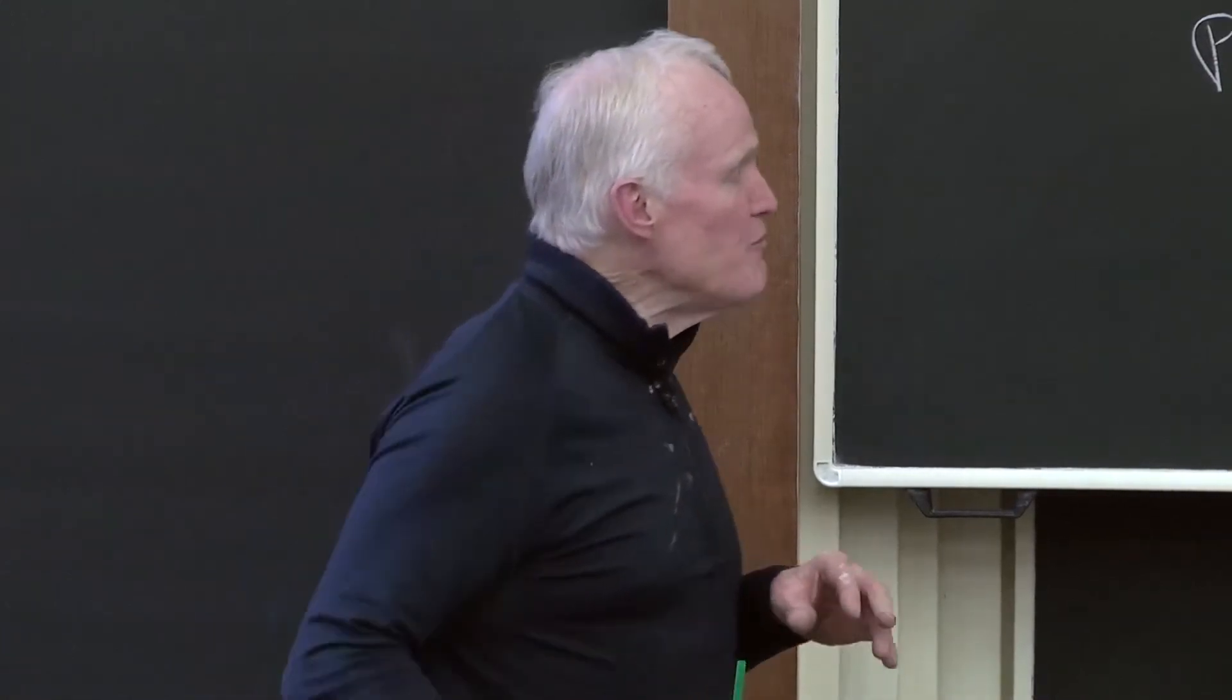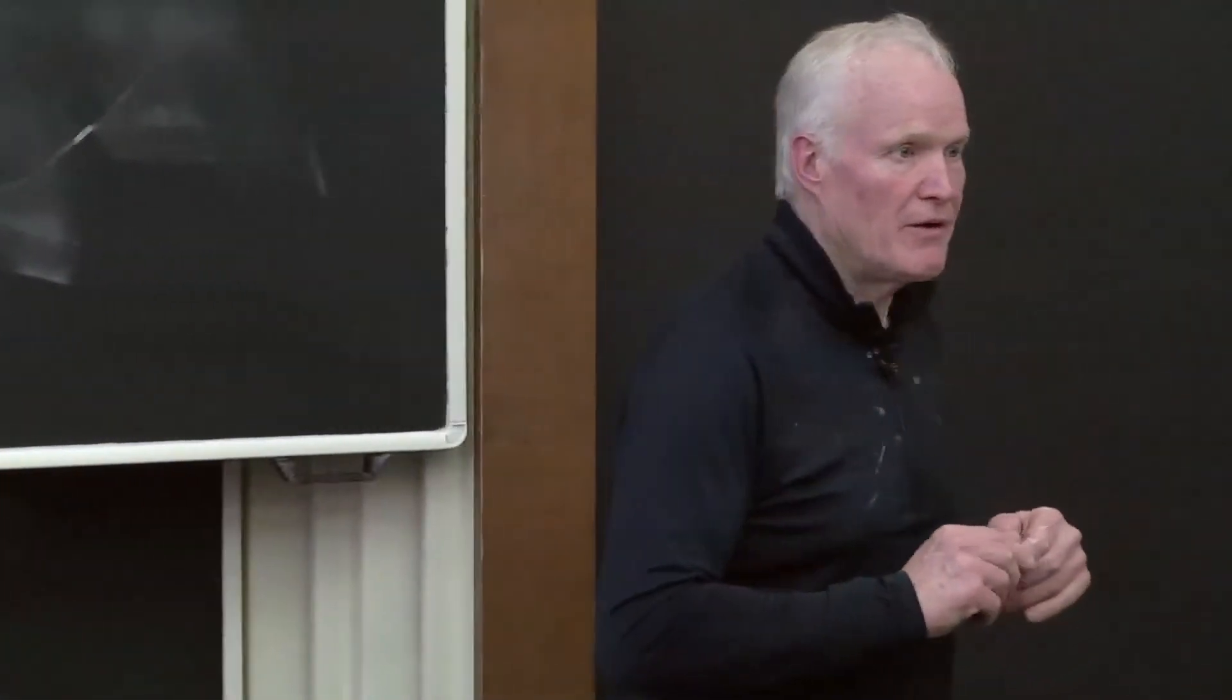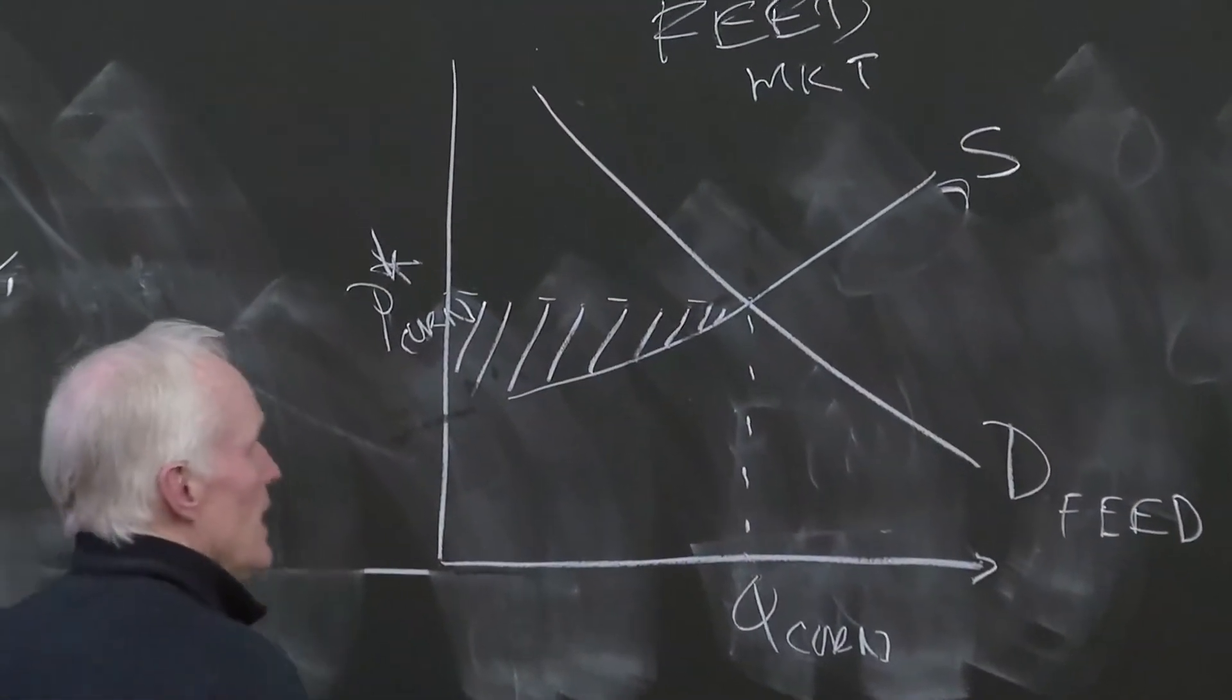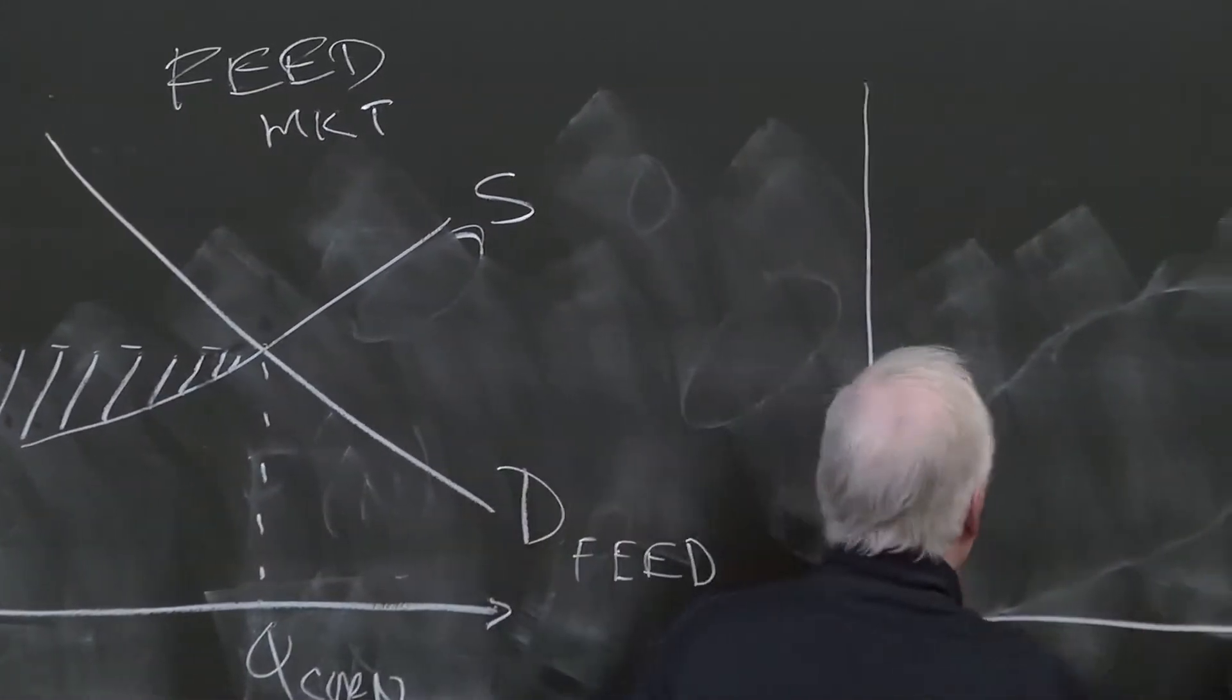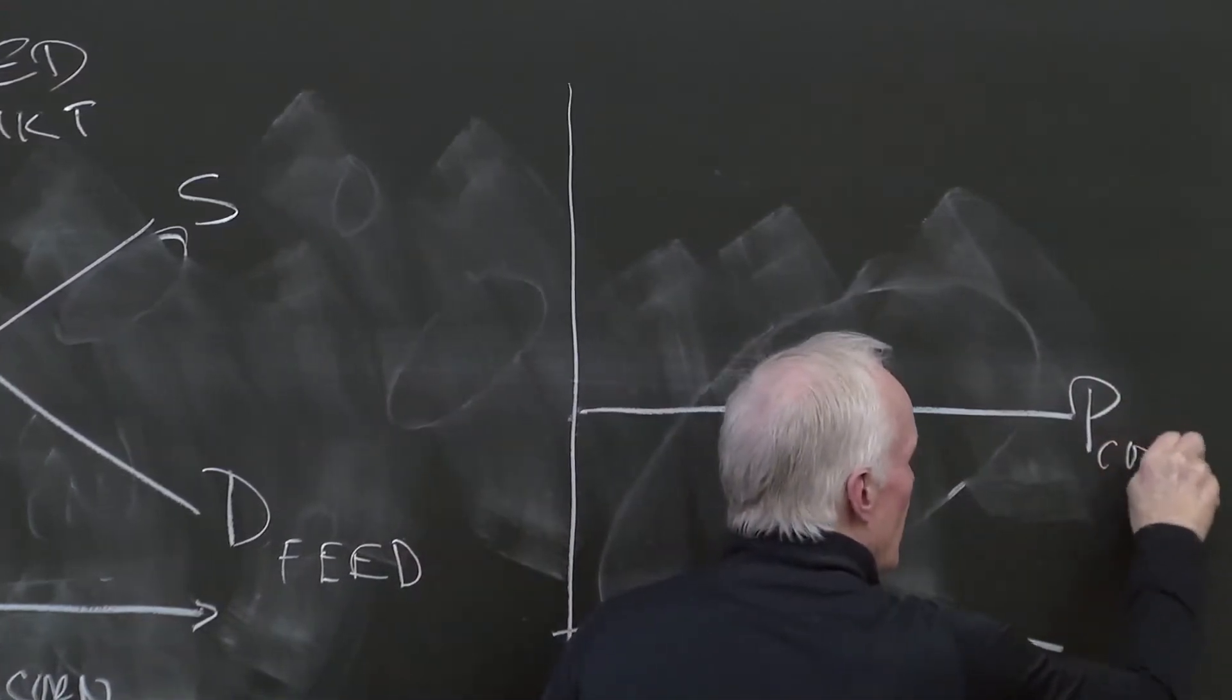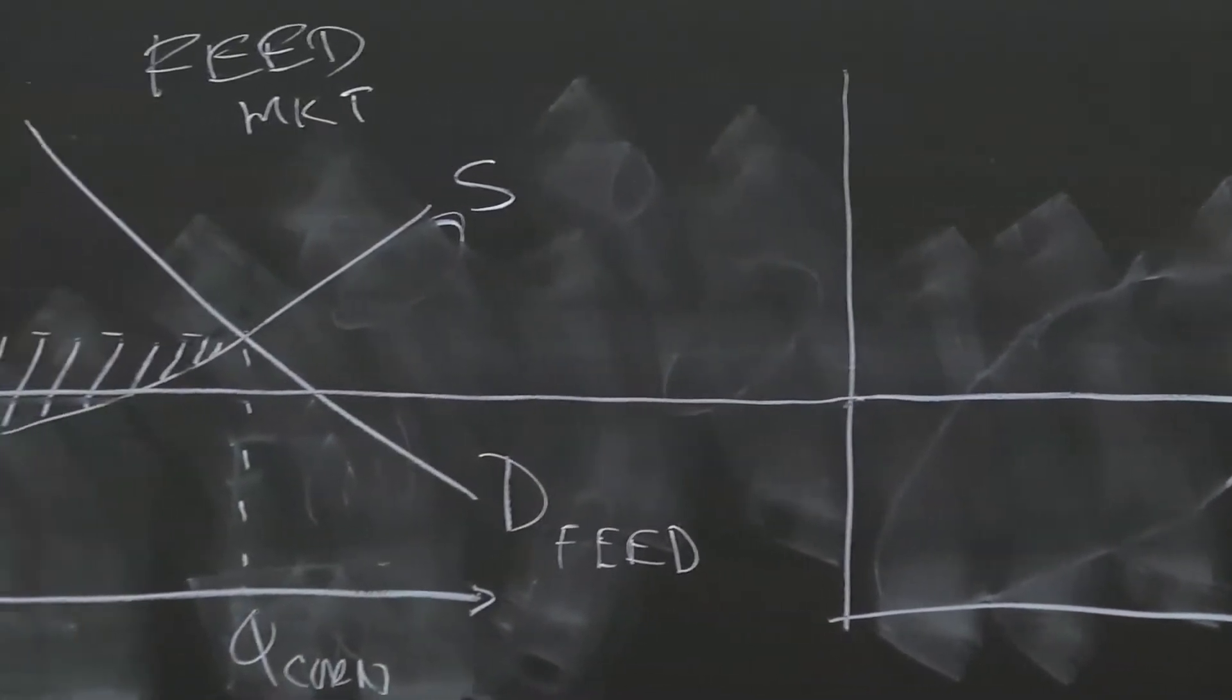If we were to introduce ethanol into this world, and we have a subsidy for ethanol, so let's assume pre-subsidy, the price for corn as an input for making ethanol would be down here.